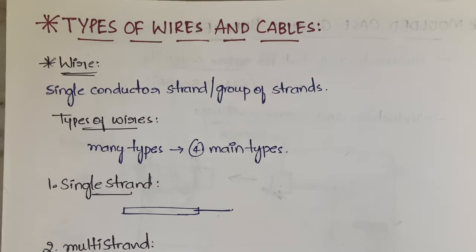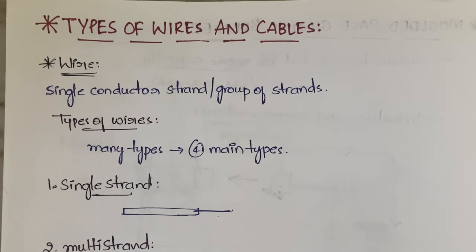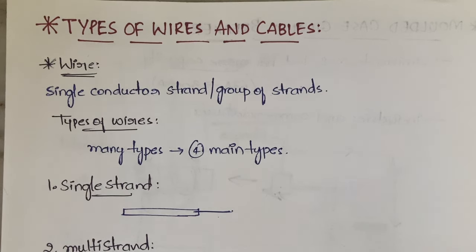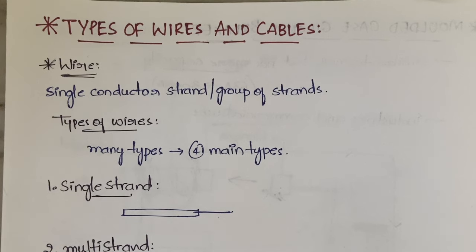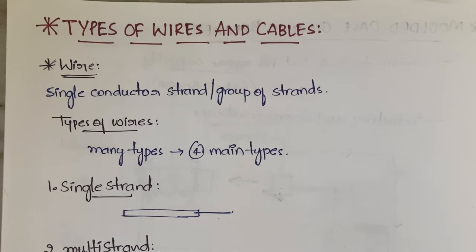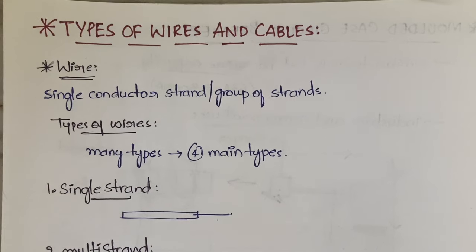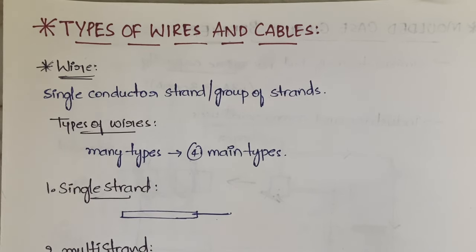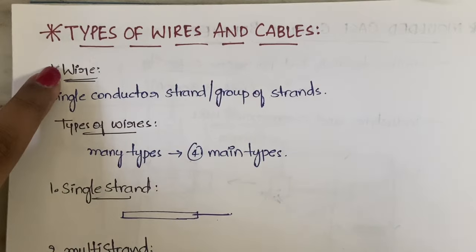Hello everyone, welcome back to my YouTube channel Trouble Free. In today's video I am going to explain types of wires and cables in the subject of Basic Electrical Engineering. We have seen some topics like MCB, MCCB, ELCB, which are part of Unit 5 Electrical Installations. I am going according to the JNTU syllabus of R18, so if your syllabus is different, let me know in the comment section.